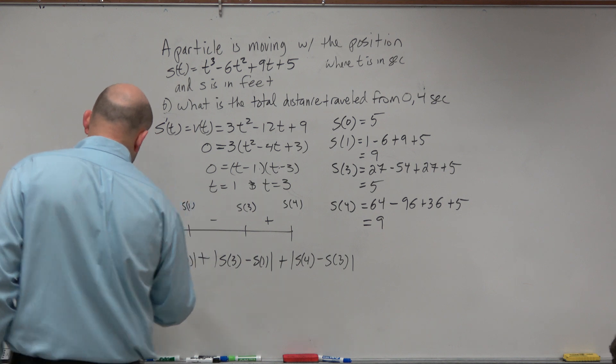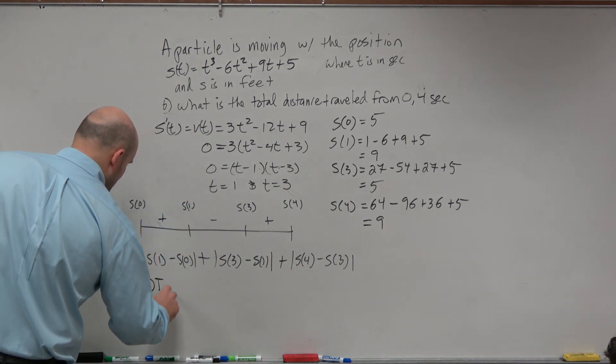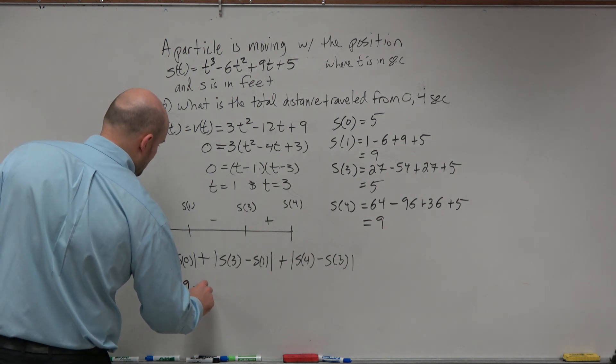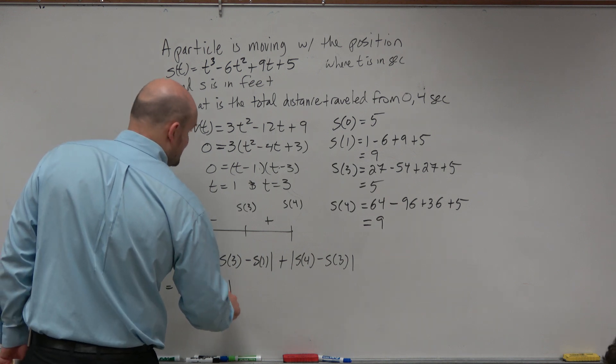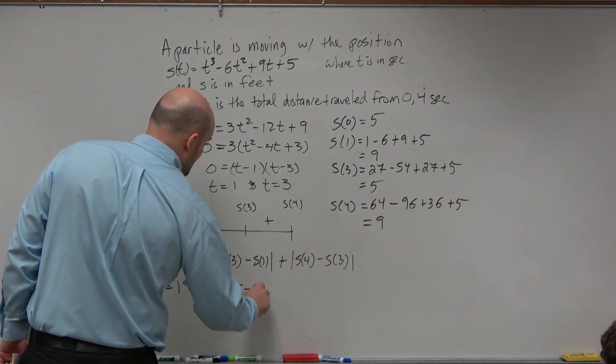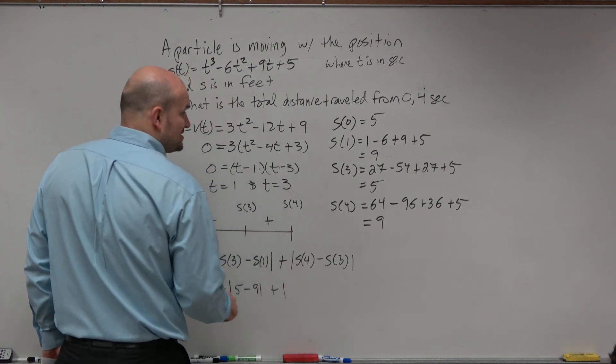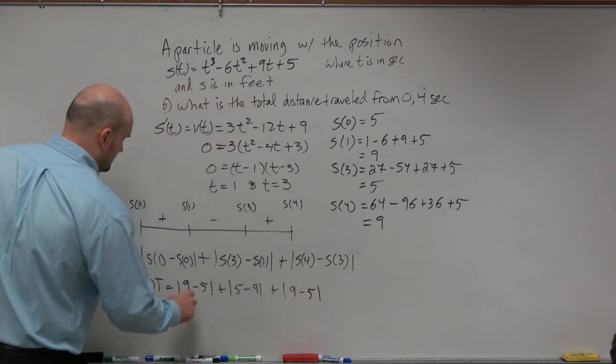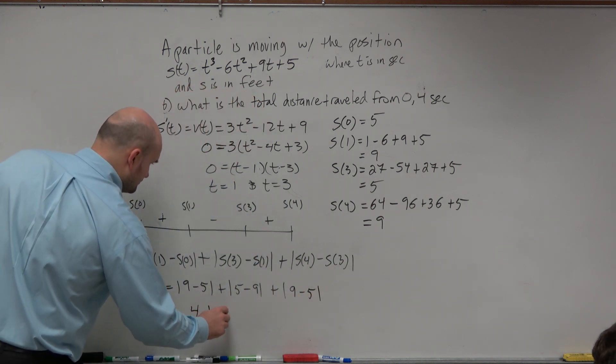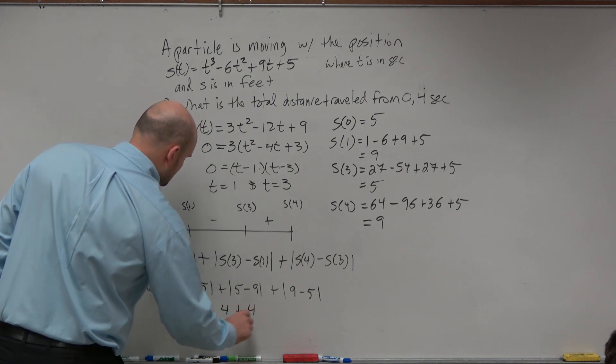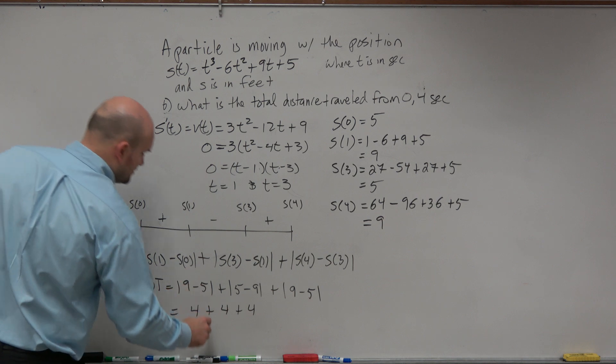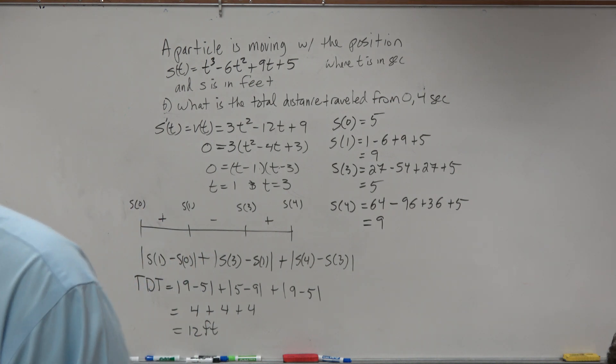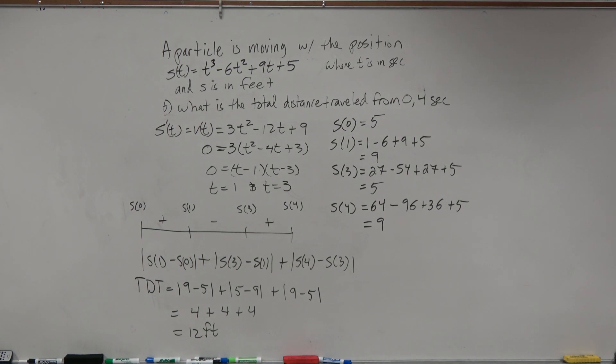To find the total distance traveled is the absolute value of s(1), which is 9, minus 5, plus absolute value of s(3), which is 5, minus s(1), which is 9, plus absolute value of s(4), which is 9, minus s(3), which is 5. And that is 12 feet.